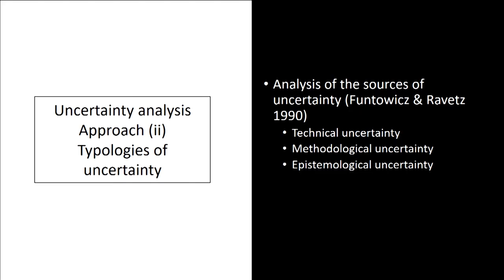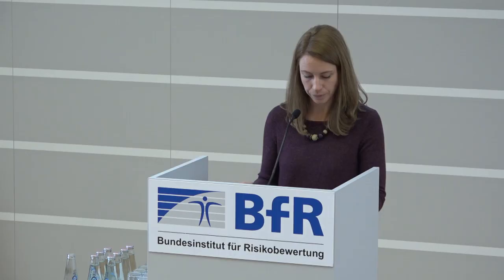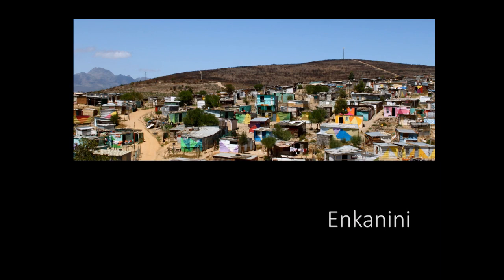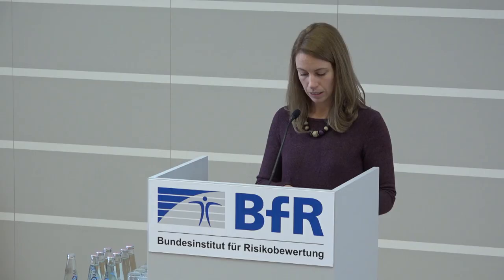In addition, I argue it is useful to distinguish between different types of uncertainty. One example is to distinguish between technical uncertainty, methodological uncertainty, and epistemic uncertainty. I will refer to a case study to explain how this approach can be applied. The case study refers to Nkanini, which is a slum in the city of Stellenbosch, South Africa. Nkanini is an informal settlement built on occupied land without authorization from the municipality, and for this reason it lacks basic services such as electricity and waste collection.